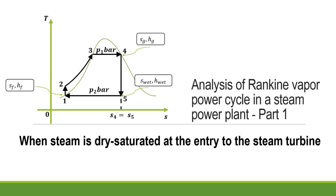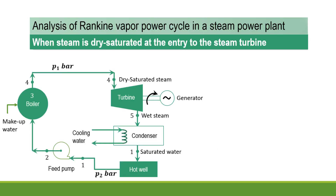In this video, we will perform analysis of the Rankine Vapor Power Cycle using a steam power plant. We have assumed that the steam is dry saturated at the entry to the steam turbine. The flow diagram is as shown here. The various components of the steam power plant are: boiler, steam turbine, generator, condenser, hot well, and feed pump. The feed pump is used to provide feed water to the boiler.